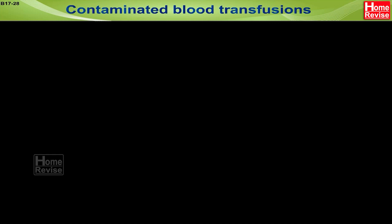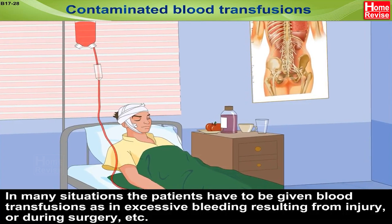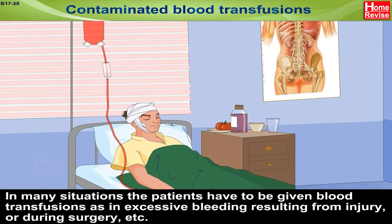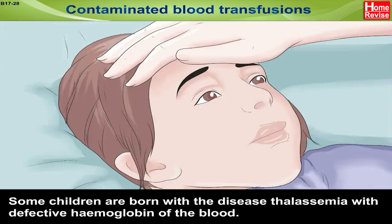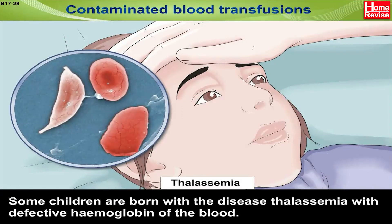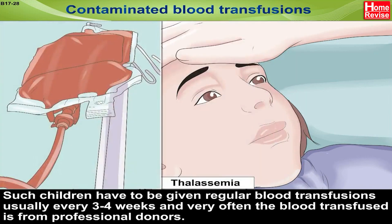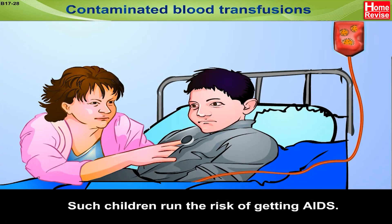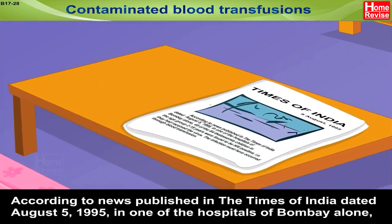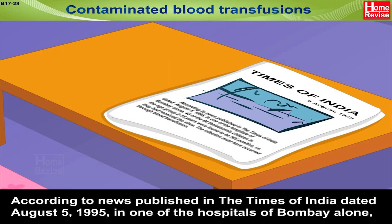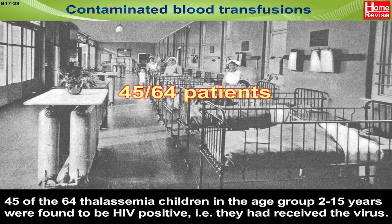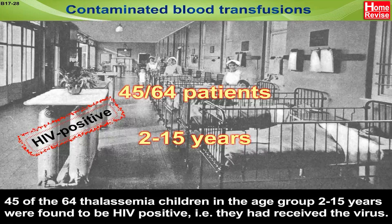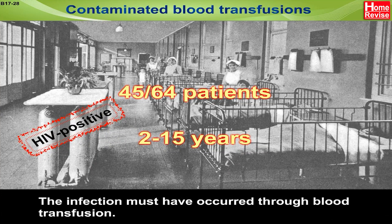Contaminated blood transfusions: in many situations patients have to be given blood transfusions, as in excessive bleeding from injury or during surgery. Some children are born with thalassemia, a condition with defective haemoglobin, and must receive regular blood transfusions, usually every 3 to 4 weeks, often from professional donors — such children run the risk of getting AIDS. According to a report in the Times of India dated August 5, 1995, in one hospital in Bombay alone, 45 of the 64 thalassemia children aged 2 to 15 years were found to be HIV positive, having received the virus through blood transfusion.